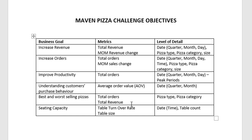We'll look at best and worst selling pizzas by orders and revenue, broken down by pizza type and category. For seating capacity, it's a bit tricky since we don't have detailed table size data, so we'll use assumptions: 15 tables and 60 seats means roughly 4 seats per table. We'll also make assumptions about party sizes and document all assumptions as we go.